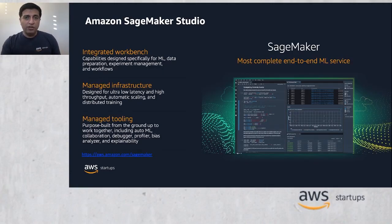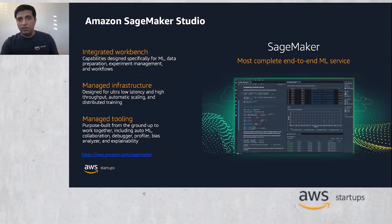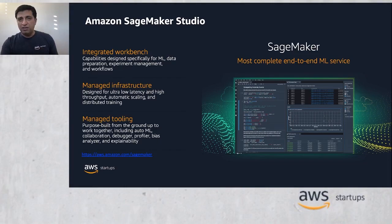Amazon SageMaker Studio is a fully integrated development IDE for machine learning. It provides a single web-based visual interface where you can perform all machine learning development steps, improving your data science team's productivity up to 10 times. SageMaker Studio gives you complete access, control, and visibility into each step required to build, train, and deploy your models. You can quickly upload data, create new notebooks, train and tune models, and move back and forth between steps to adjust experiments, compare results, and deploy models to production — all in one single place, making you much more productive.